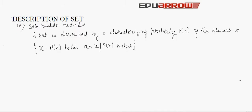The second form is the set builder method. In the set builder method, a set is described by a defining property P(x) of its elements x, which is represented as: x such that P(x). For example, this notation can be read as 'the set of all x such that P(x).'